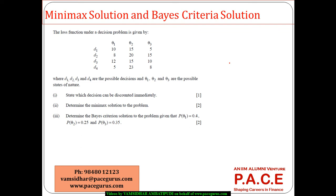Let's try to solve this simple numerical. The loss function under a decision problem is given by this. D1, D2, D3, D4 are the possible decisions and theta1, theta2, theta3 are the possible states.